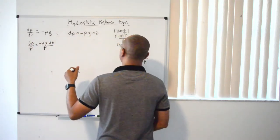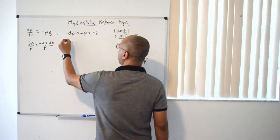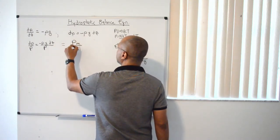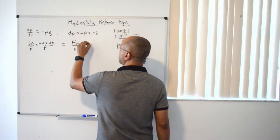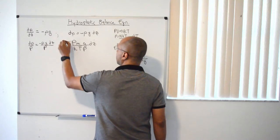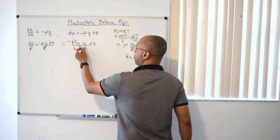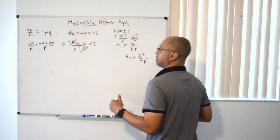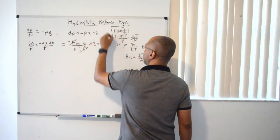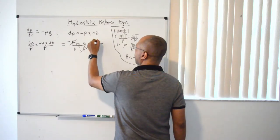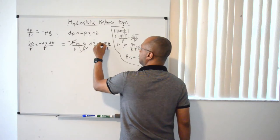So we have negative ρg dz over p. And then we're going to plug in for ρ, pm over kt, g dz. All right? So what's going to happen here is that the p's cancel.